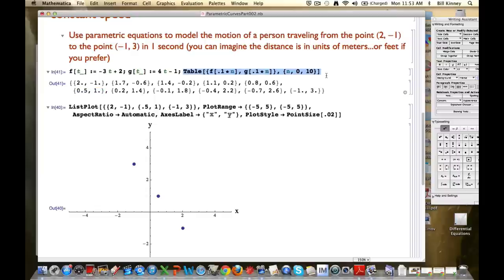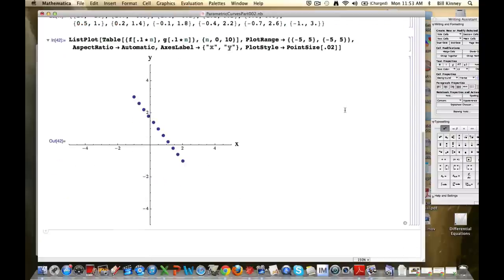Now what I can do, I could give this thing a name and just plug it in down here, but I'm just going to copy and paste the entire table command right there. I'm embedding one command in another. Table is going to get evaluated first. I pasted it there. It's going to generate this list and then ListPlot will plot that list. Here we go. There are those 11 points starting at time 0 when you're here and going up in increments of time of 0.1 each time to get up here when time is 1.